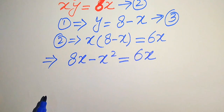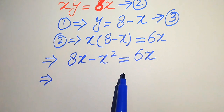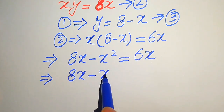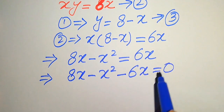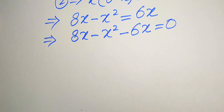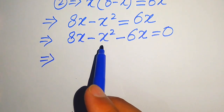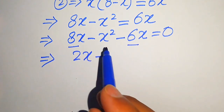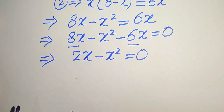Now we move 6x to the left hand side, so it becomes 8x minus x squared minus 6x equals 0. In the next step we add or subtract the like terms: 8x minus 6x equals 2x, giving us 2x minus x squared equals 0.